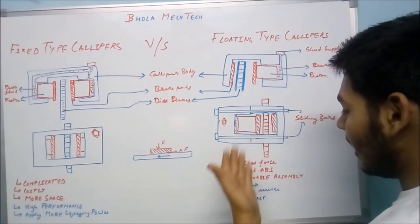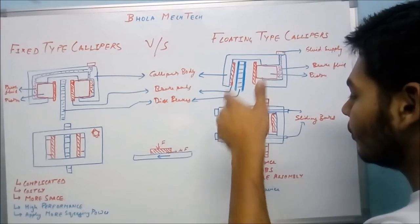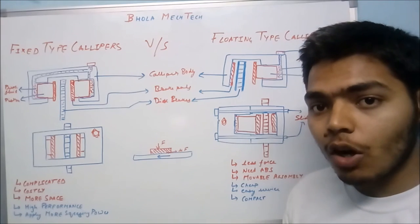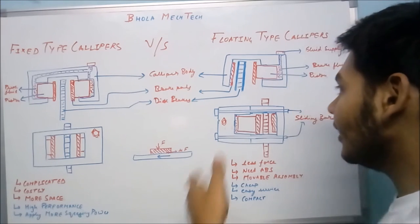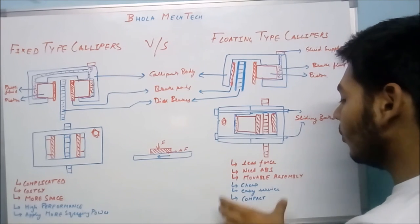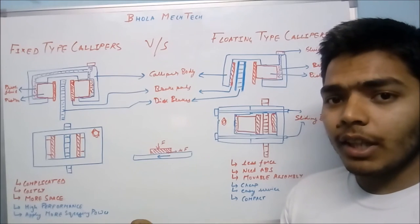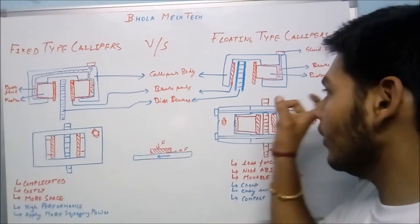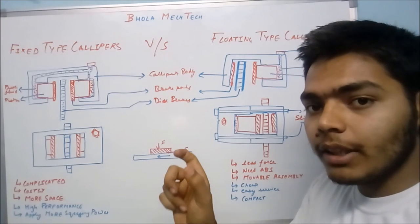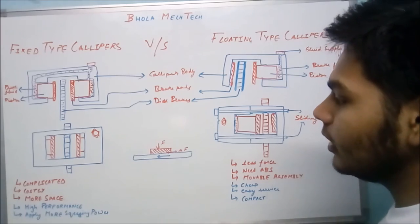The disadvantages of the floating type caliper: it produces less braking force because only one piston is actuating. It needs ABS because preventing wheel lock is more difficult in this design. Also, since the assembly is movable, you need to account for the space it occupies after movement when designing the layout.